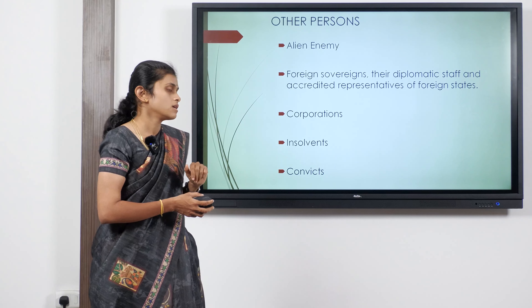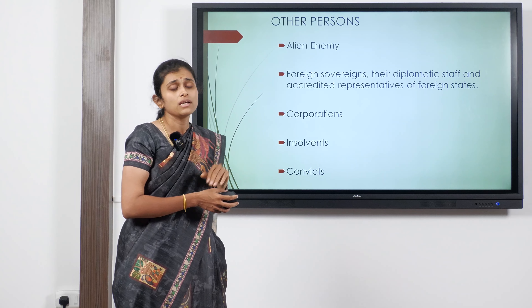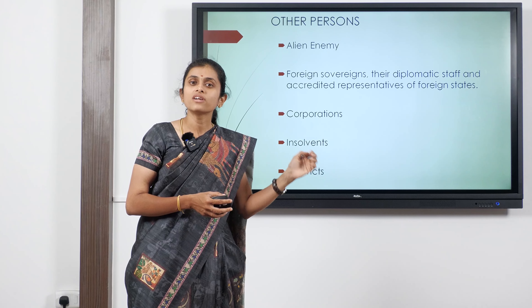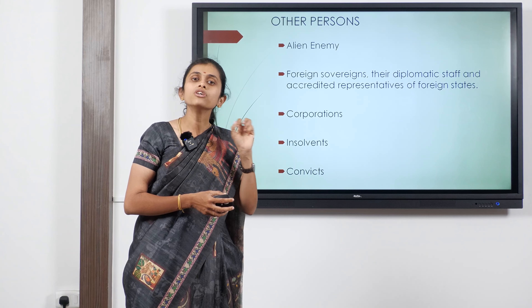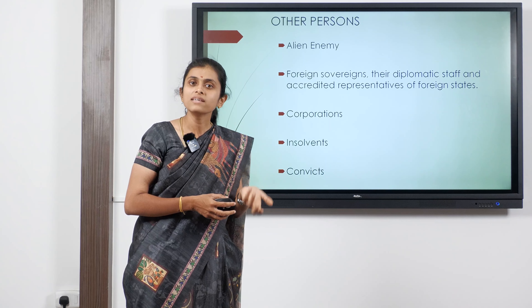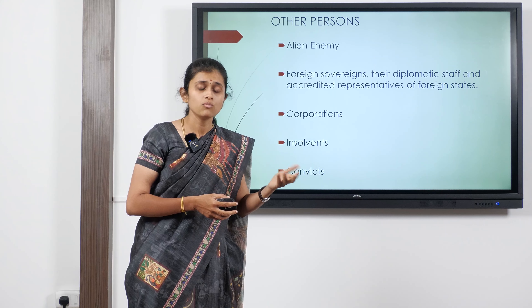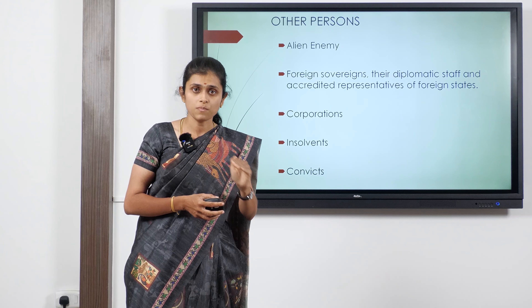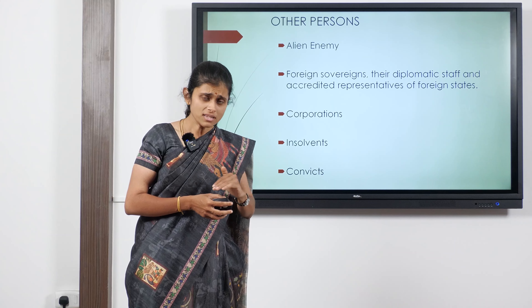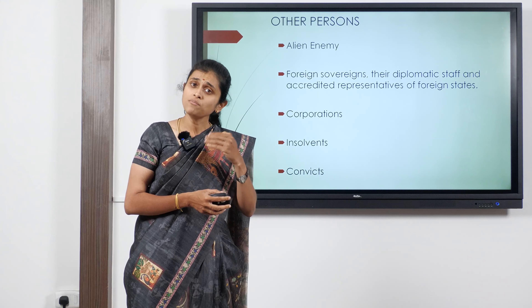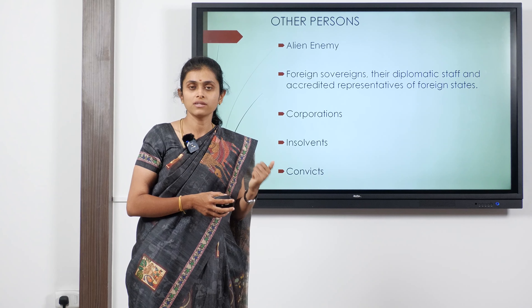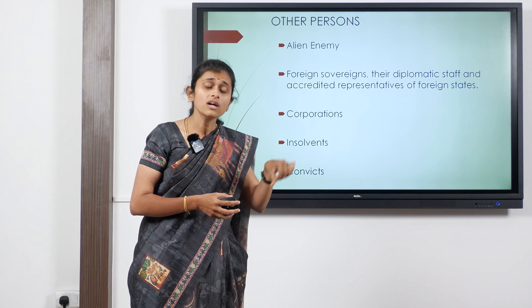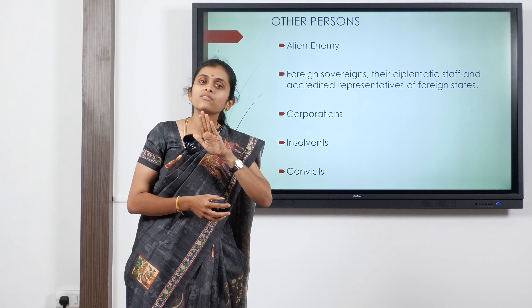The third category is other persons disqualified by law. First, alien enemies: any contract between persons of enemy countries is affected. For example, if Mr. X belongs to Russia and Mr. Y to Ukraine, and they entered a contract to supply goods before the war, when war broke out that contract is suspended. Once the war is over, the contract can be revived depending on both parties and the position of the countries. Any contract entered into with an alien enemy during war is void ab initio.